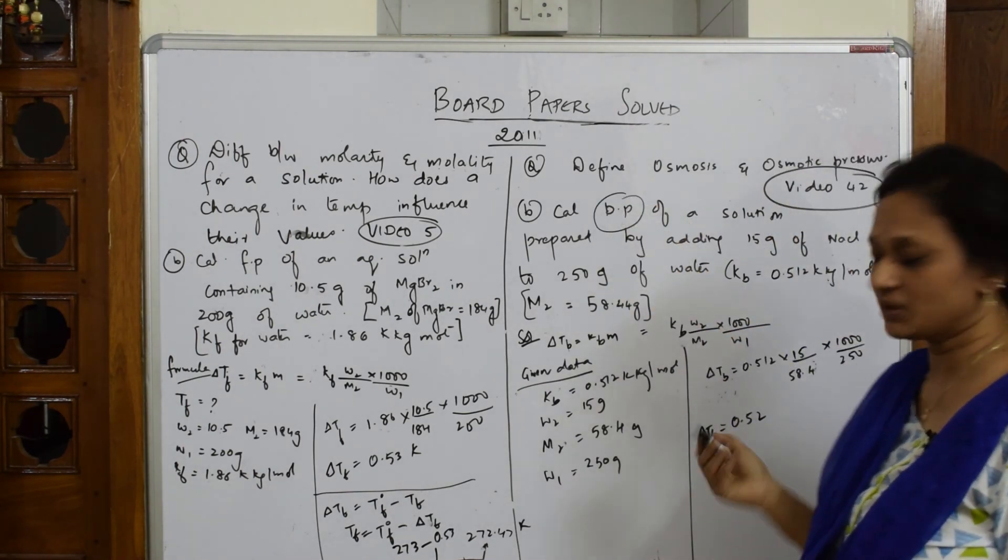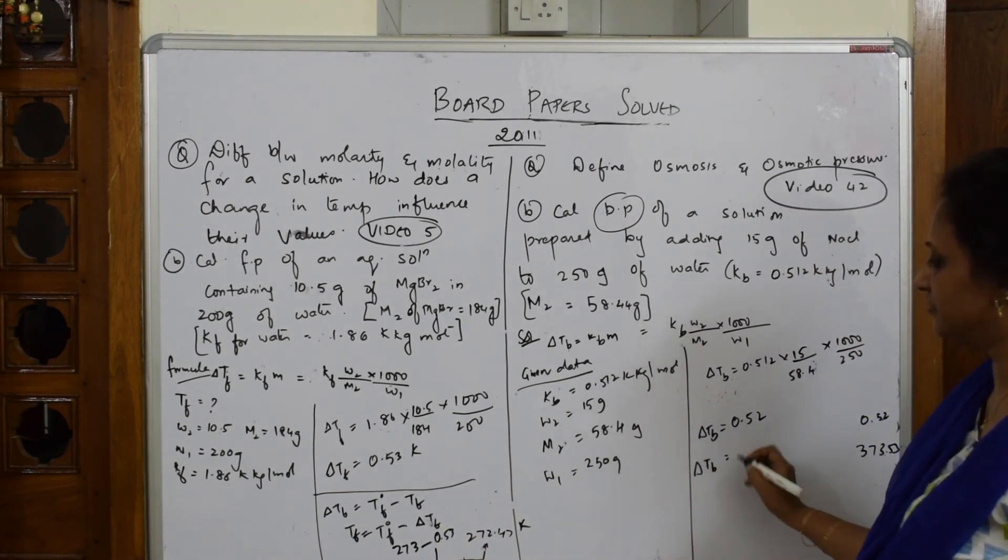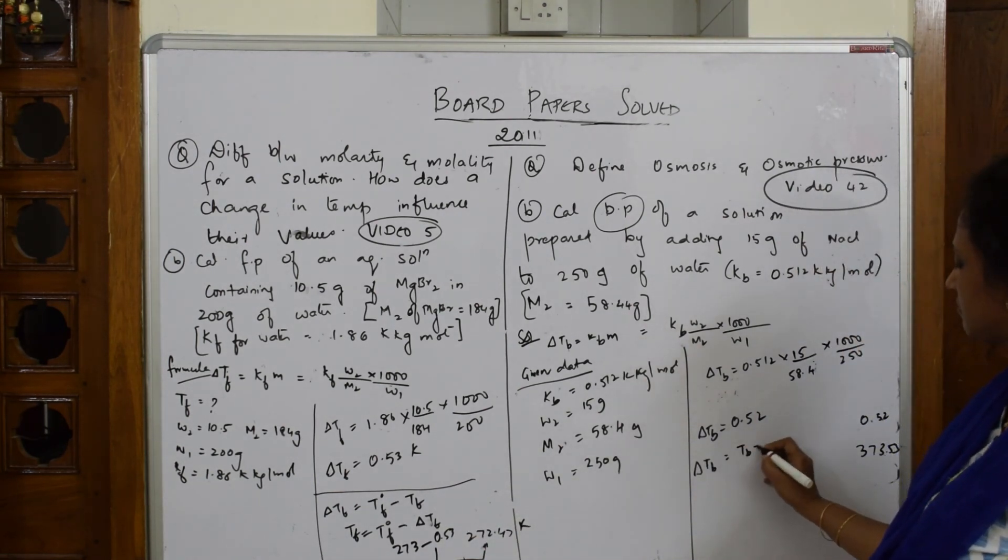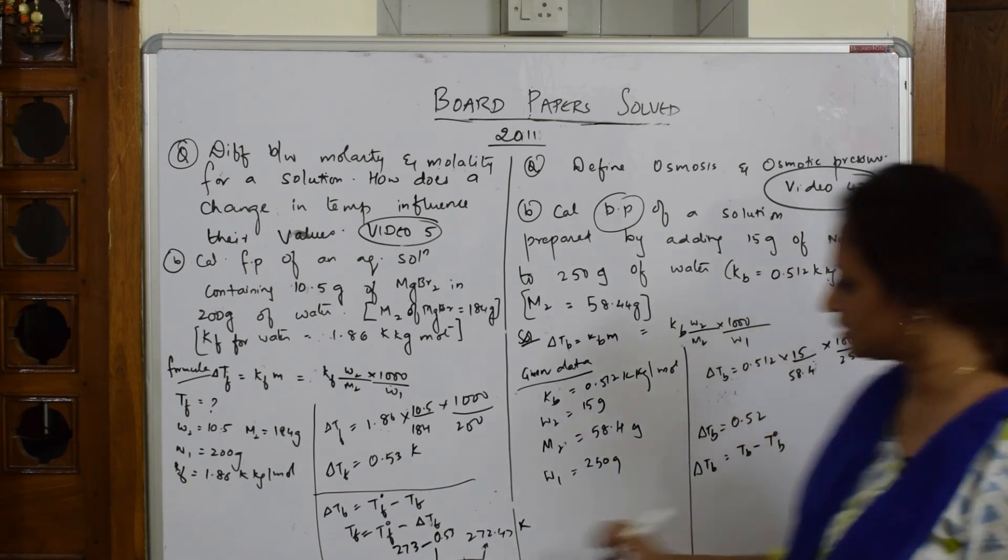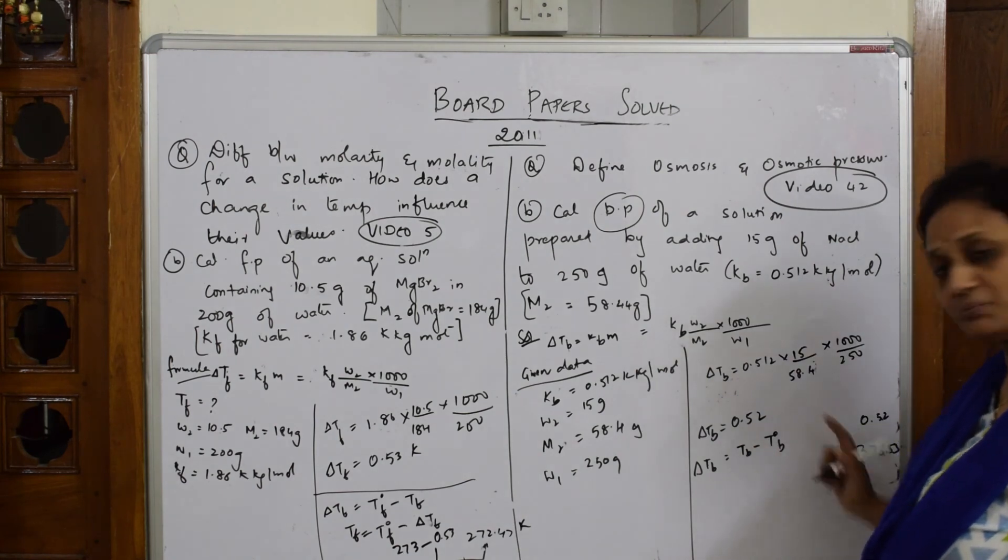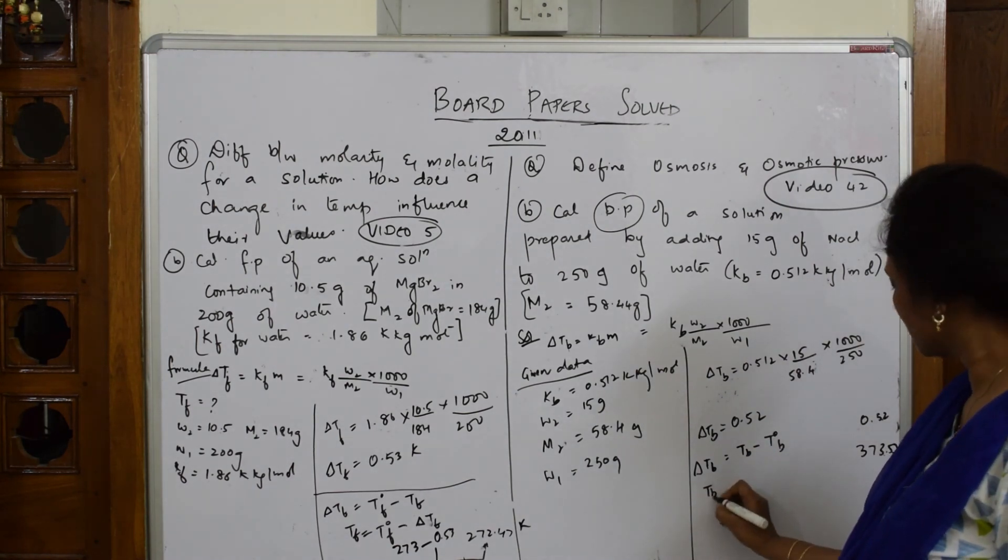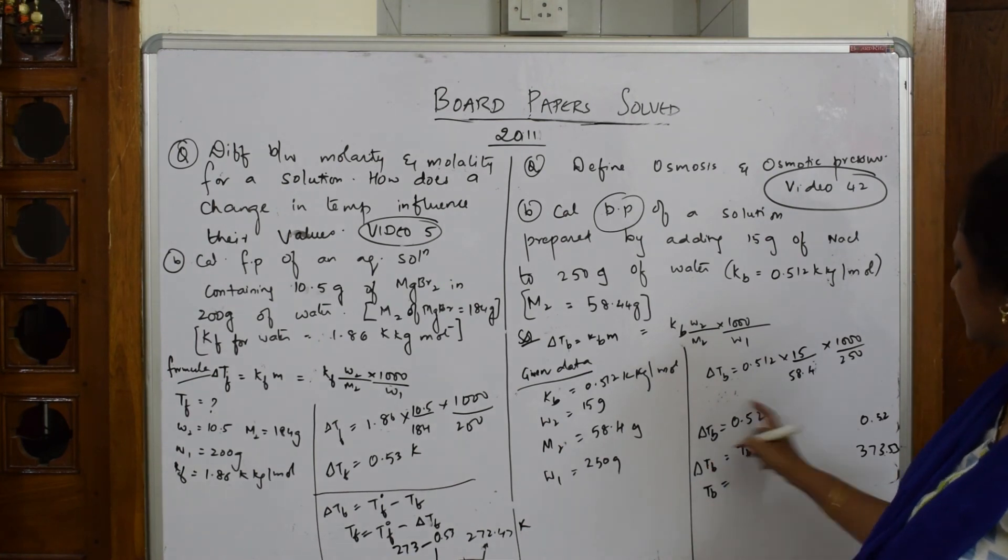My answer is not complete because they asked for BP. We have the relation: delta TB equals TB minus T naught B.